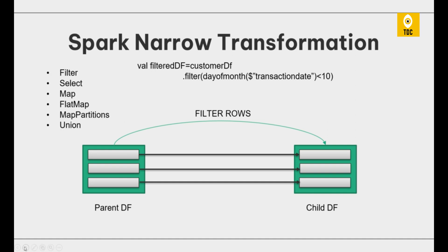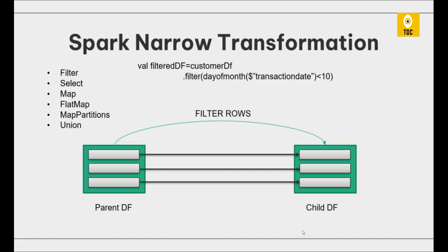The operations that constitute narrow transformations include: filter, select, map, flatMap, mapPartition, and union. To apply a filter or select, there is no need for shuffling. For union, even if you have two parent data frames — say each with three partitions — the child will have six partitions in a one-to-one mapping with both parents. So logically, union is also a narrow transformation.